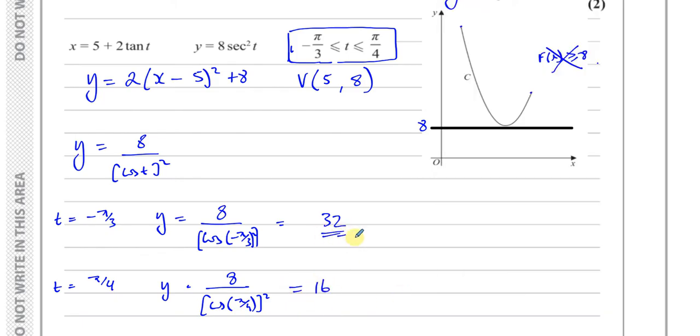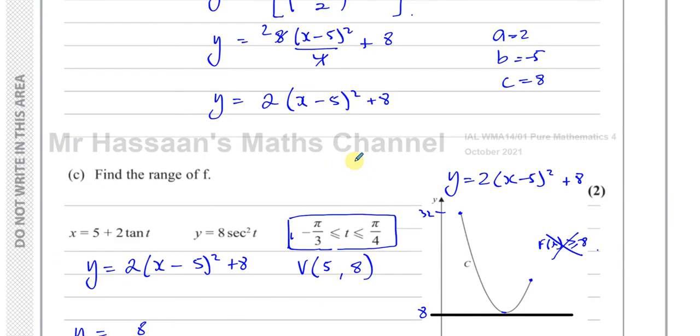Okay, so this is the highest value. Therefore we can say that the range of f of x is f of x is between 8 and 32, with equal signs. So you're going to have a closed circle there, closed circle there, so 8 is less than or equal to f of x which is less than or equal to 32. And there is the answer to part C. And I think that concludes our question, question number 5 from this P4 paper.